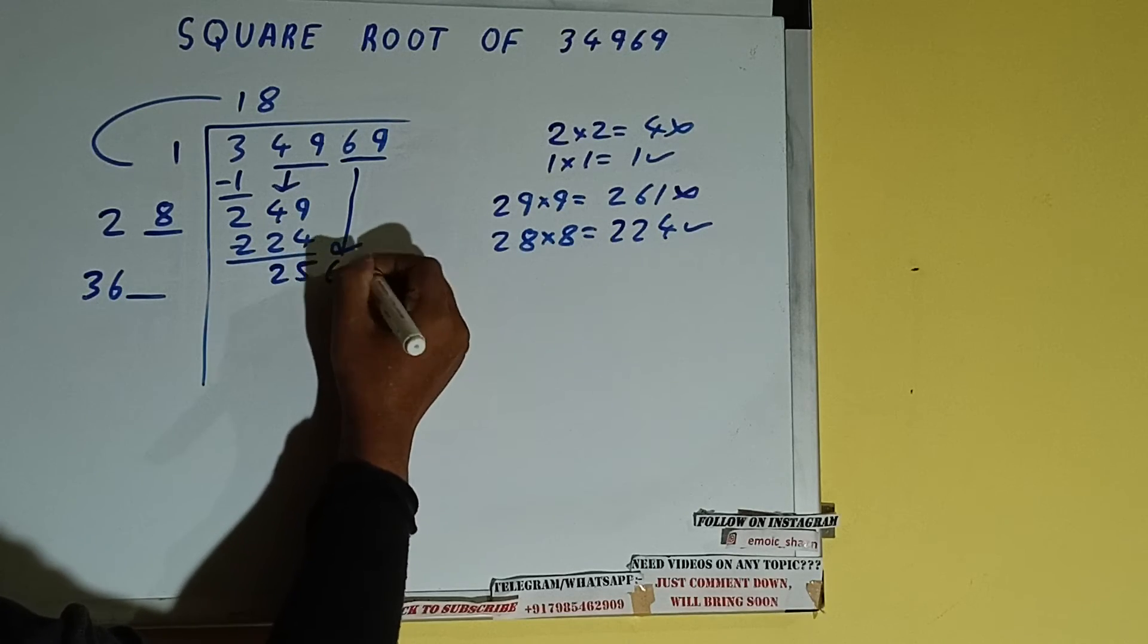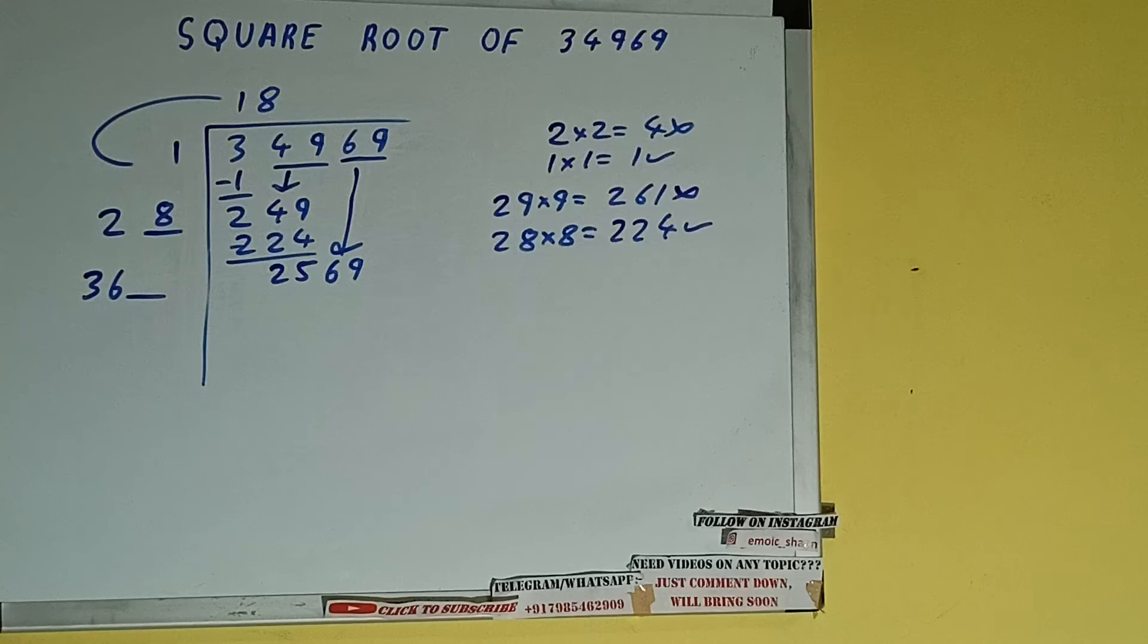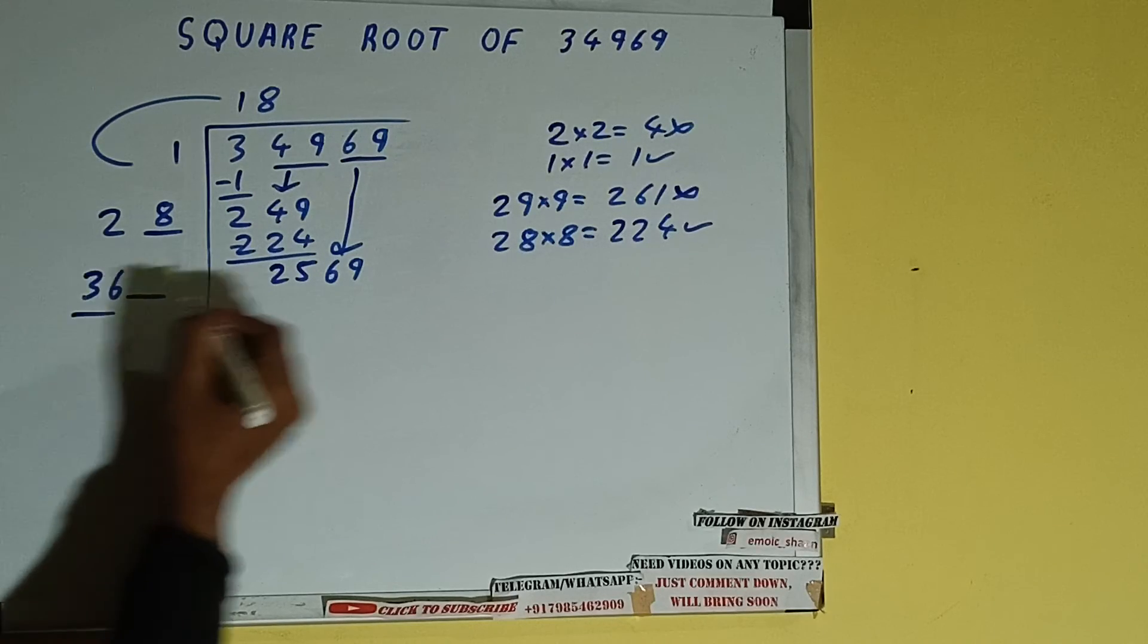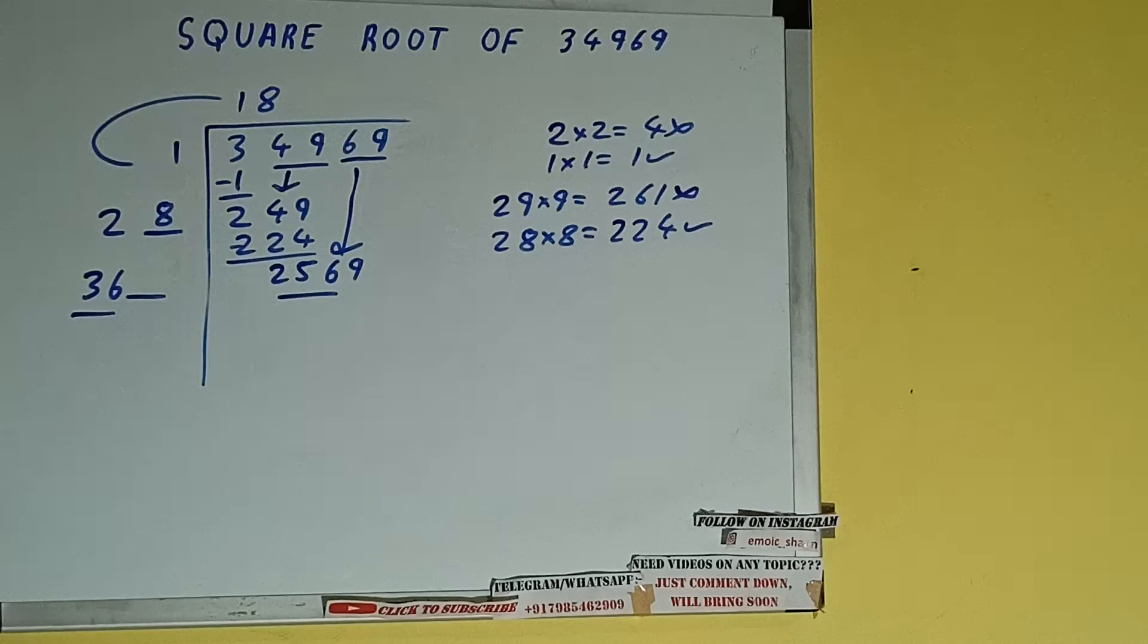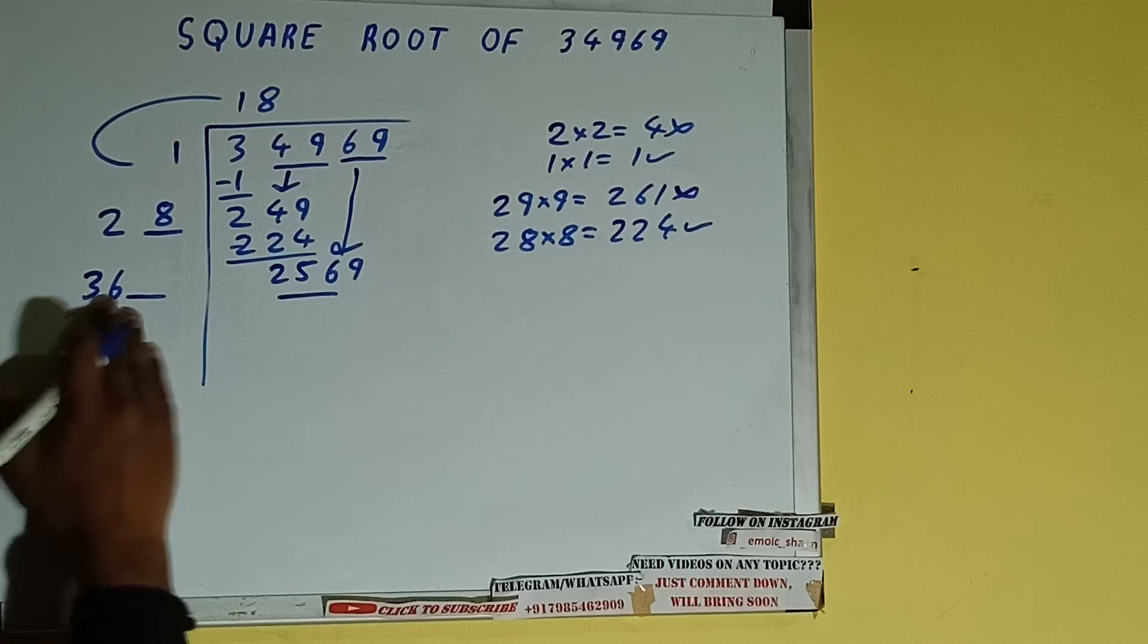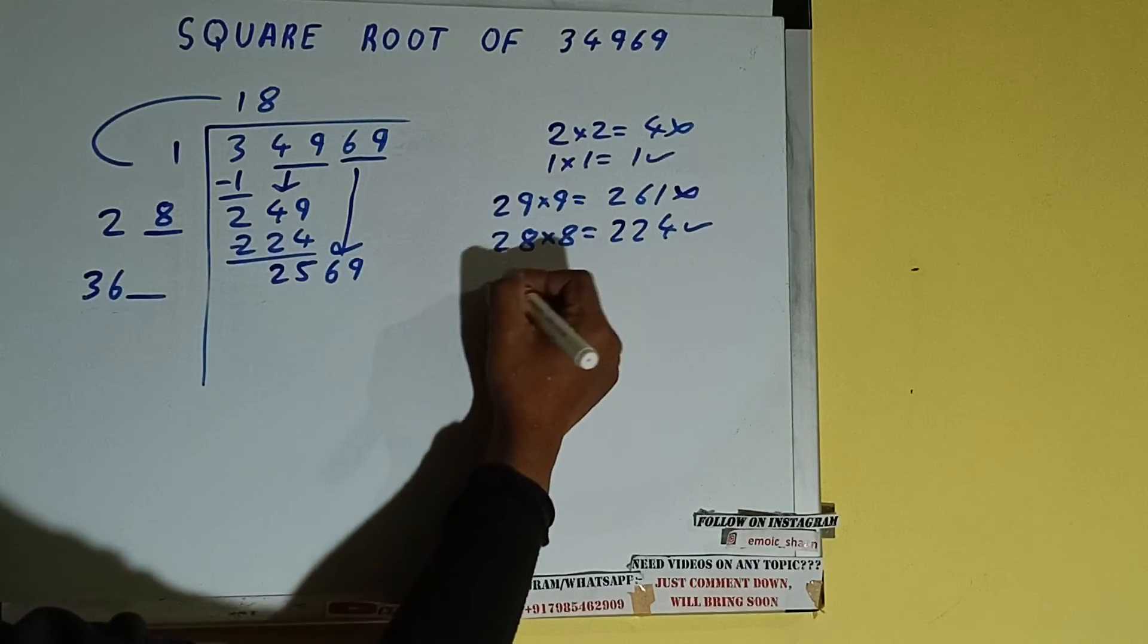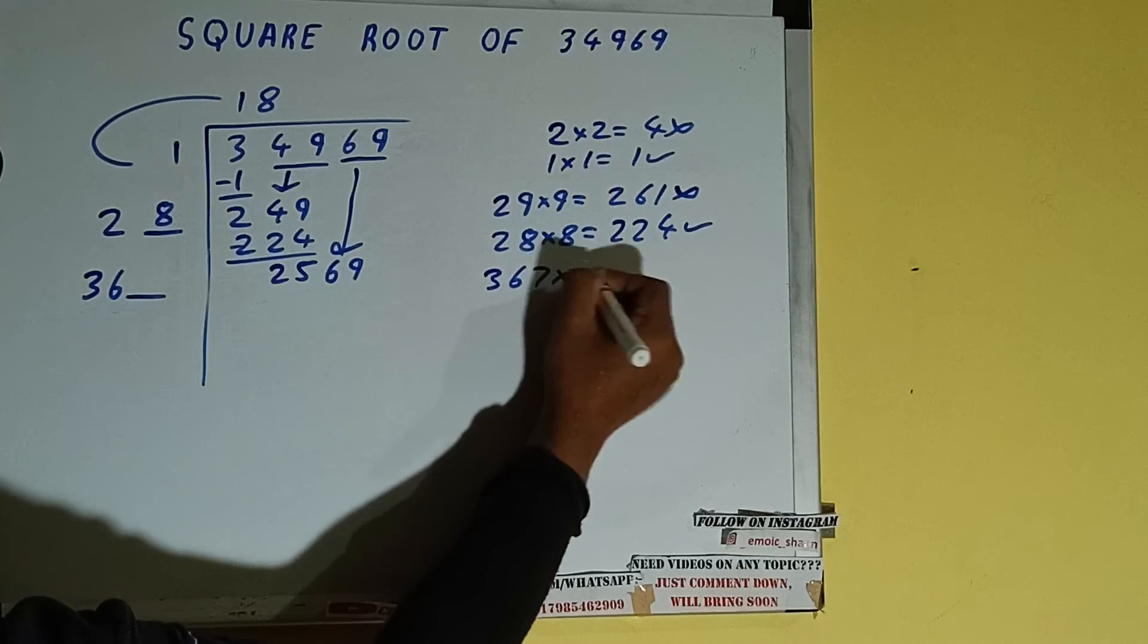Now compare this 36 and 256. So 36 seven times is 252, so we can try out 7 times. 367 into 7 we can try, and it will be...